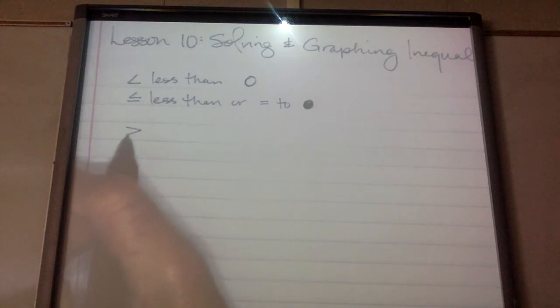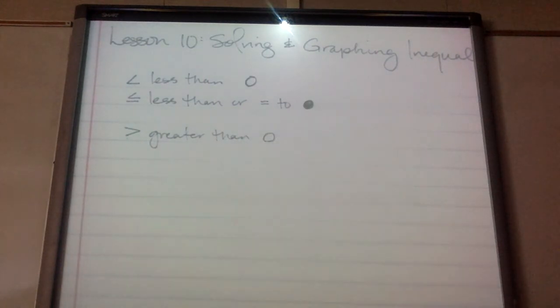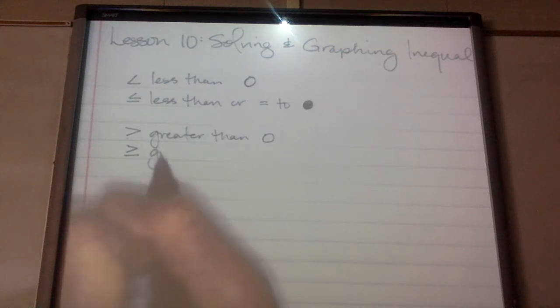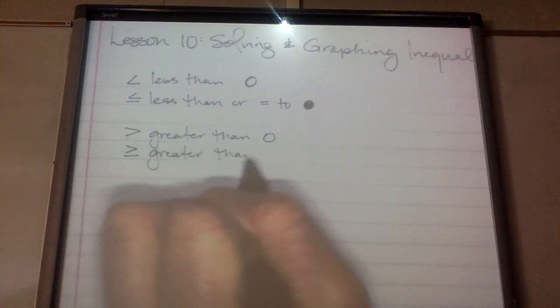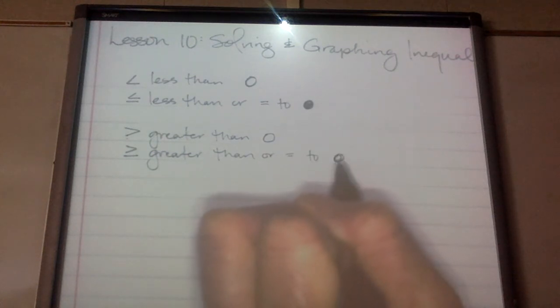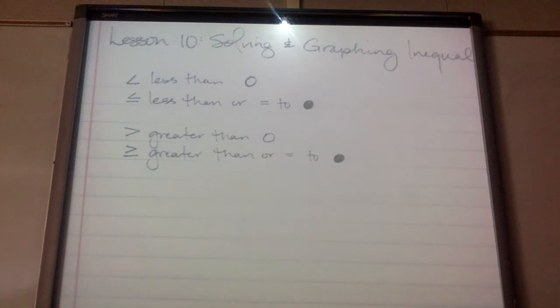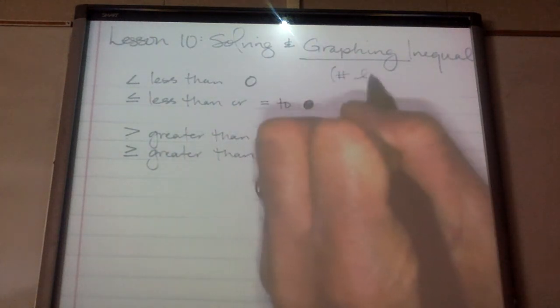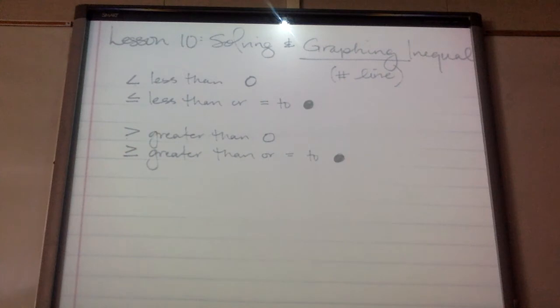Then there is the greater than symbol. Remember, if it doesn't have the equal to, then I'm going to use an open circle to graph it. And then there's greater than or equal to. If it has that equal to, then when I graph it on the number line, I'm going to use a solid circle. When we graph, we're simply going to use the number line — not an X and Y Cartesian format, just simply a number line.